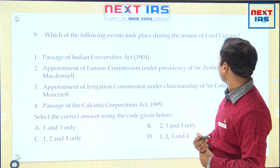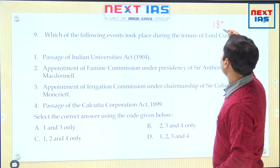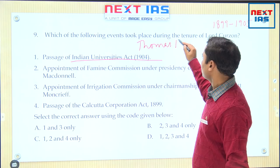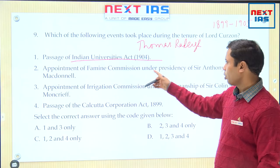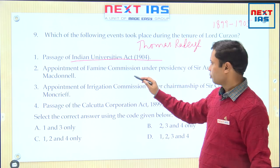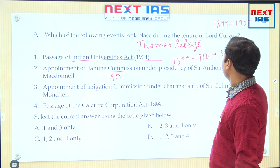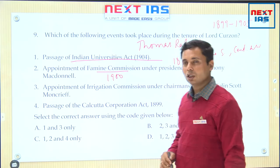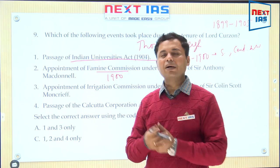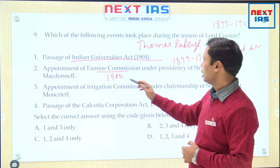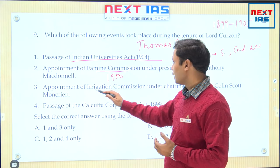Next, question number 9: which of the following events took place during the tenure of Lord Curzon? Curzon's tenure was 1899 to 1905. The passage of the Indian Universities Act 1904 — based on Thomas Raleigh Commission — is true. Appointment of the Famine Commission under the presidency of Sir Anthony MacDonnell is also true. This Famine Commission was appointed in the year 1900 because of severe famine in 1899–1900, whereby large parts of South India, Central India, and Western India were affected. Curzon, a very efficient administrator, appointed this Famine Commission to address the situation.